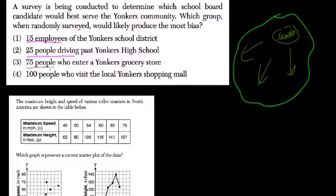Seventy-five people who enter Yonker's grocery store is even better. It's a larger sample set. Seventy-five is larger than twenty-five and fifteen, and they're shopping. Now, everybody needs to buy groceries. We're assuming that the people in the grocery store, unless it's some kind of really high-end or low-end grocery store, will be less biased.